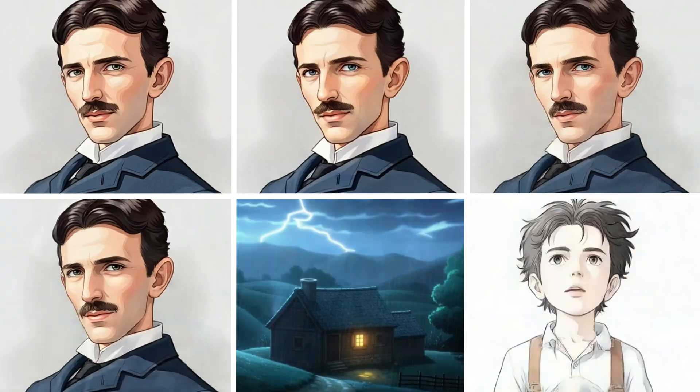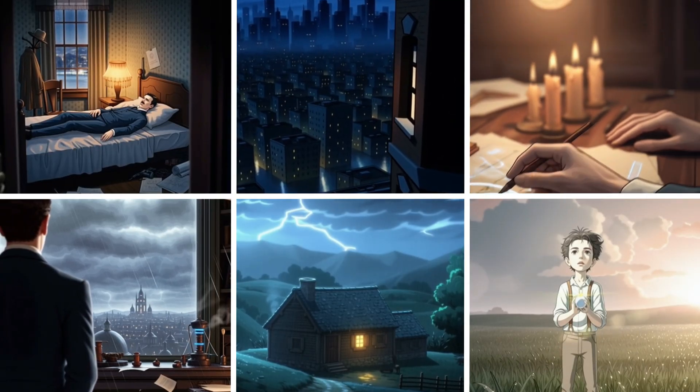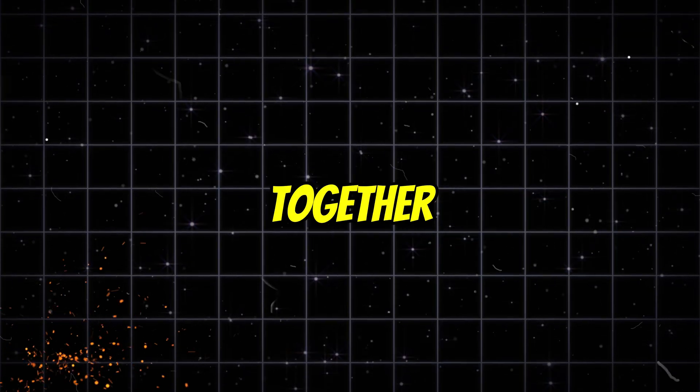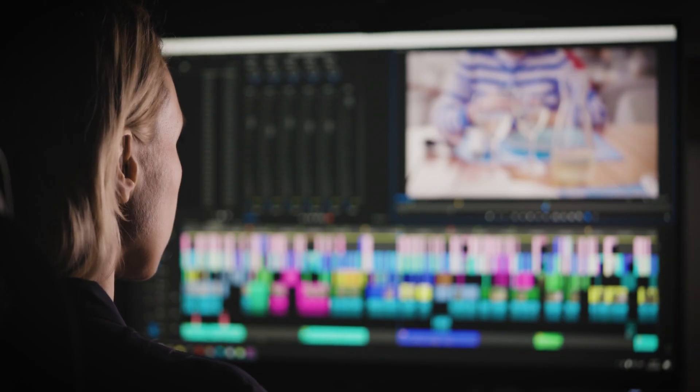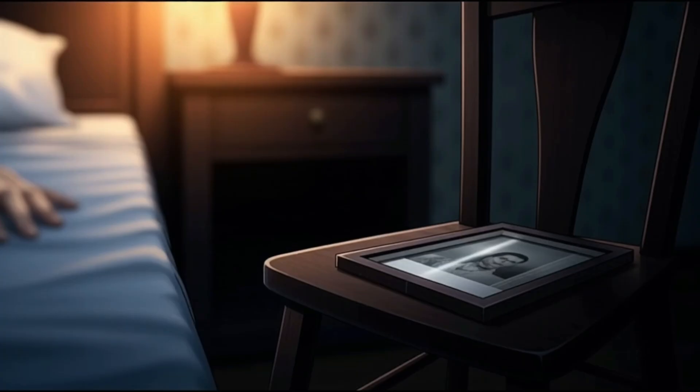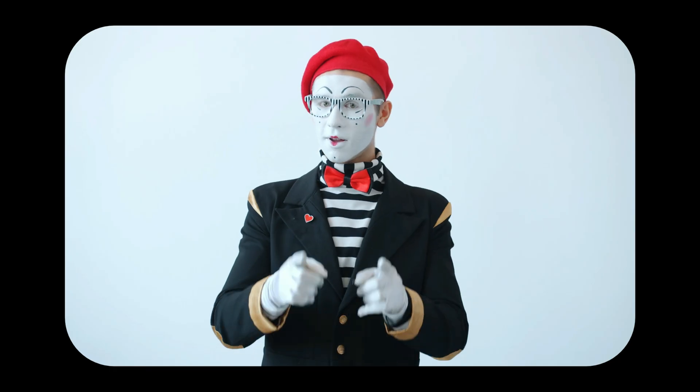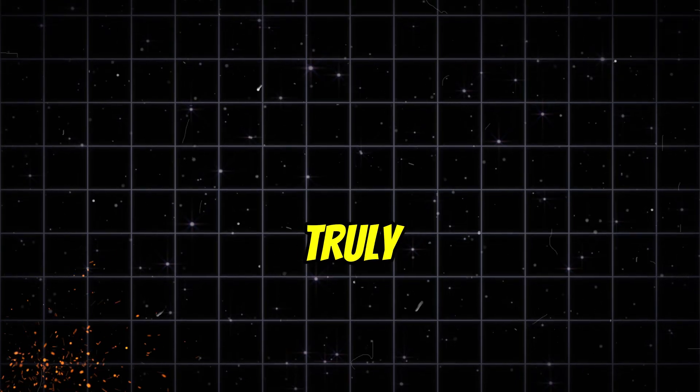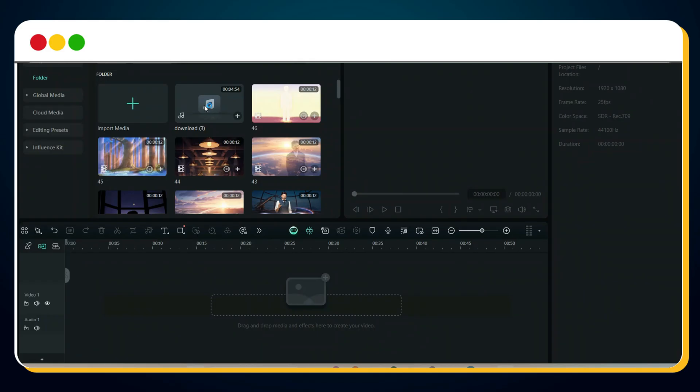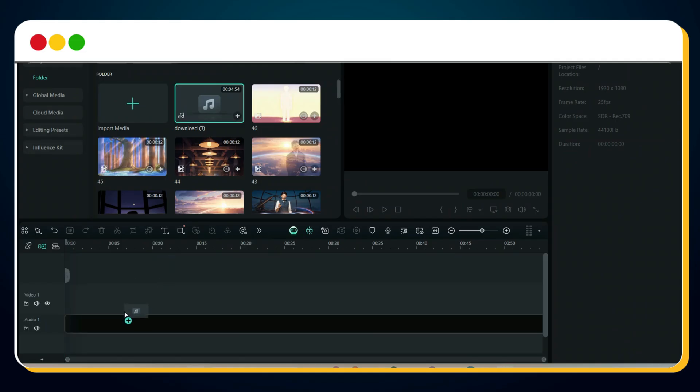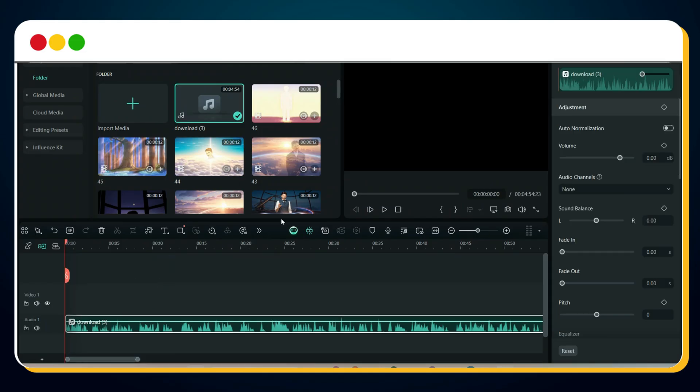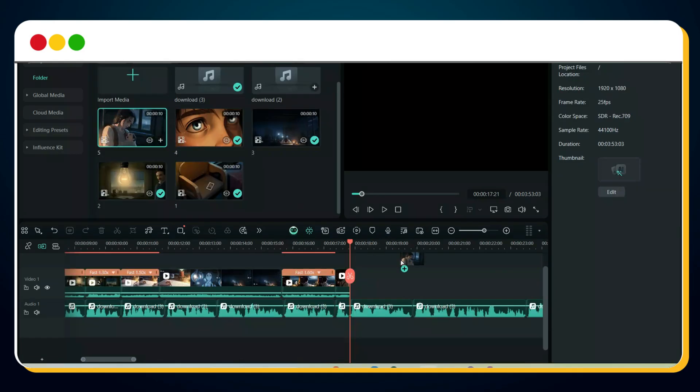We've got our voiceover, our Sora 2 clips, and every scene ready. Now it's time to bring it all together into one cinematic story. This is the final step that transforms your project from individual clips into a complete, emotionally synced film. And trust me, this is where your story truly starts to breathe. First, import your voiceover layer onto the timeline. Now we'll start syncing the video clips to that narration.